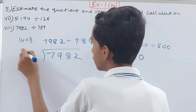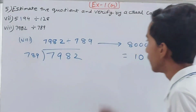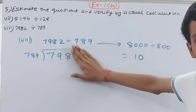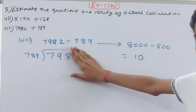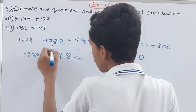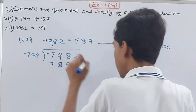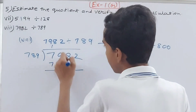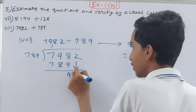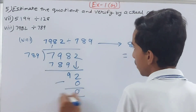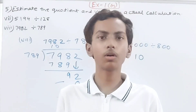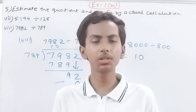For the actual 7982 ÷ 789: 789 into 798 goes 1 time. 789 into 798, remainder 9. Bring down 2, giving 92. 92 is less than 789, so minus 0, quotient is 0. Actual quotient is 10 remainder 92. And friends, that's all for today — if you are new to my YouTube channel do not forget to subscribe and leave a like. Take good care of yourselves.